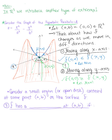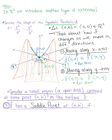So if we considered a small region or open disk centered at some point, specifically the origin here, on the surface of f, we say that our function f has a saddle point at the ordered pair (a,b) if f(x,y) is greater than f(a,b)